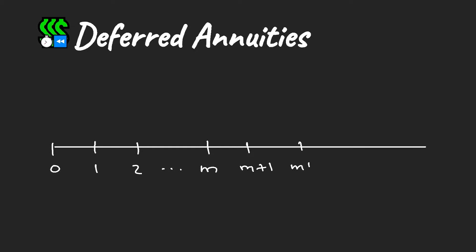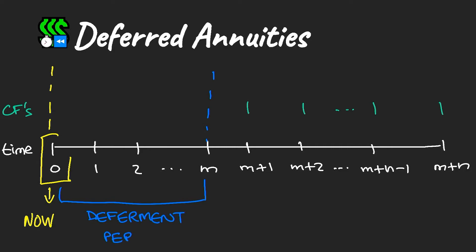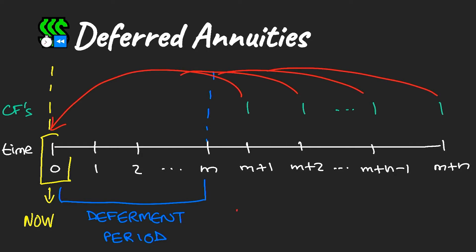For a deferred annuity with n greater than zero, we draw a timeline up to period m, and then from m to time m plus n. Our reference point remains time zero. Cash flows are paid at times m+1, m+2, all the way to m+n — paid in arrears, starting after a deferment period of m years. We want to calculate the present value at time zero.